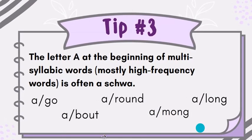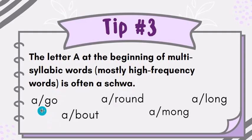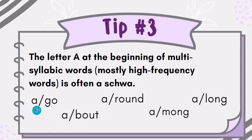Tip number three: the letter A at the beginning of multi-syllabic words — mostly high-frequency words — is often a schwa. High-frequency words like ago, about, around, among, along. They are multi-syllabic, more than one syllable, and A is saying the 'uh' sound — neither long A nor short A.